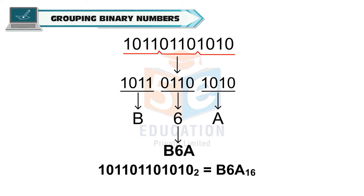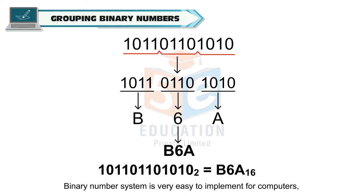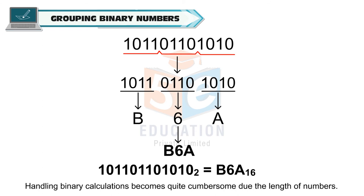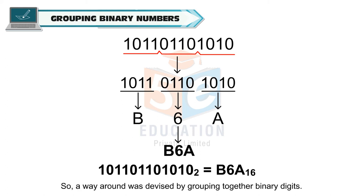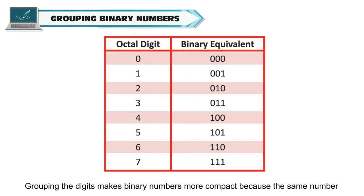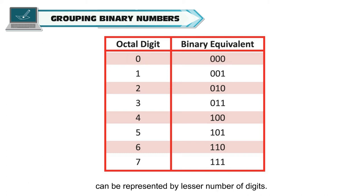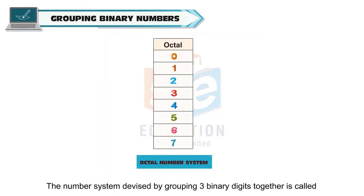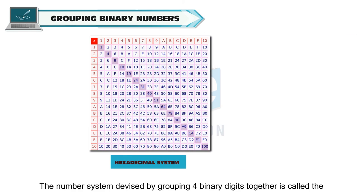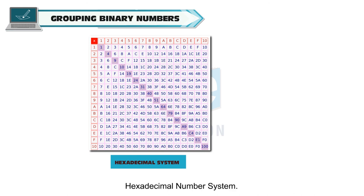Grouping binary numbers. Binary number system is very easy to implement for computers, but it also makes input figures very lengthy. Handling binary calculations becomes quite cumbersome due to the length of numbers. So, a way around was devised by grouping together binary digits. Grouping the digits makes binary numbers more compact because the same number can be represented by a lesser number of digits. The number system devised by grouping 3 binary digits together is called the octal number system. The number system devised by grouping 4 binary digits together is called the hexadecimal number system.